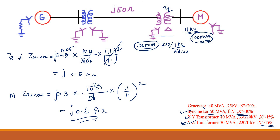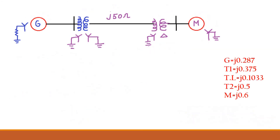This is the way to find the per unit value and choose the MVA and KV for all components in the power system. After finishing this, I am going to draw the impedance diagram. The per unit values obtained are: generator J0.287, T1 J0.375, transmission line J0.1033, transformer 2 J0.5, and motor J0.6. For the impedance diagram, I will use the symbols for generator, transformer, transmission line, and motor.